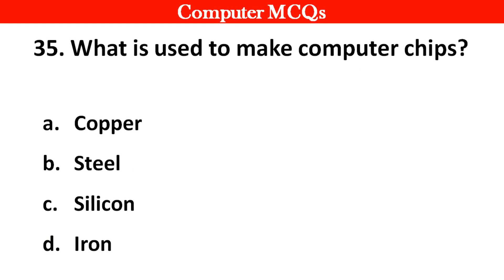Next question. What is used to make computer chips? Options A: Copper, B: Steel, C: Silicon, D: Iron. Right answer is option C: Silicon. Thank you. Before you go, stay tuned.